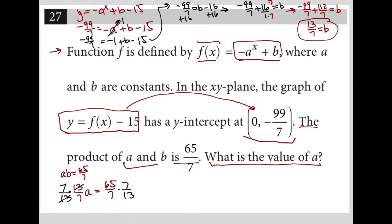That allows my 13s to cross out, my 7s to cross out, and provides the isolated a that I want. And then I can do some cross-cancellation here as well. 13 goes into itself once, it goes into 65 five times, and the 7s cross each other out. So therefore, a is equal to 5. So our answer here is 5.